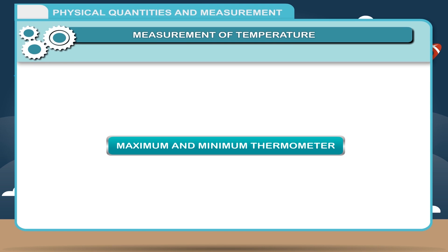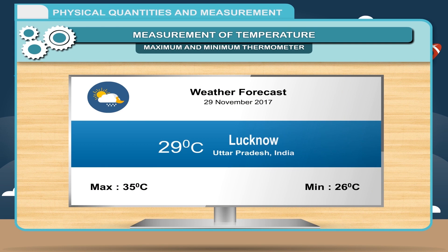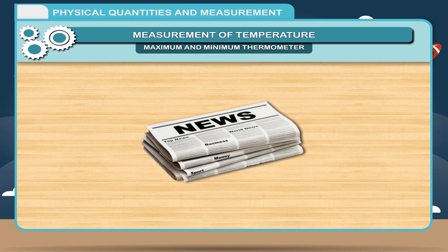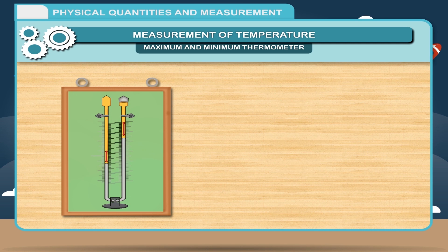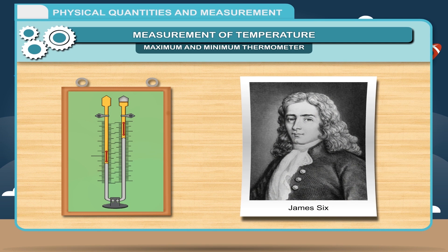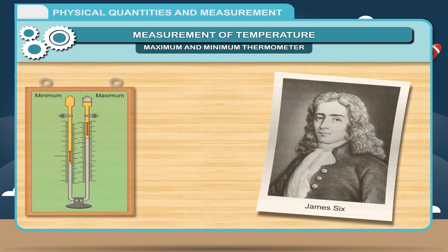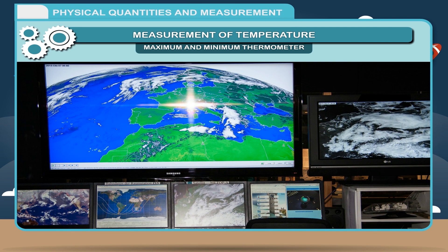The maximum and minimum thermometer records the maximum and minimum temperatures of a city, as seen on television screens and in newspaper weather reports. This thermometer was invented by James Six in the 18th century and is therefore named Six's thermometer. It measures the minimum and maximum temperature attained during the day and is used by meteorologists to record the highest and lowest temperature of a place on a given day.